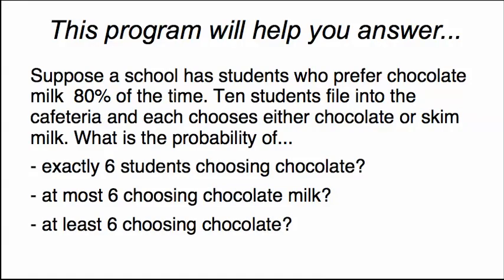This program will help you answer questions like this. Suppose a school has students who prefer chocolate milk 80% of the time. Ten students file into the cafeteria, and each chooses either chocolate or skim milk. What is the probability of exactly six students choosing chocolate, at most six students choosing chocolate, and at least six students choosing chocolate?